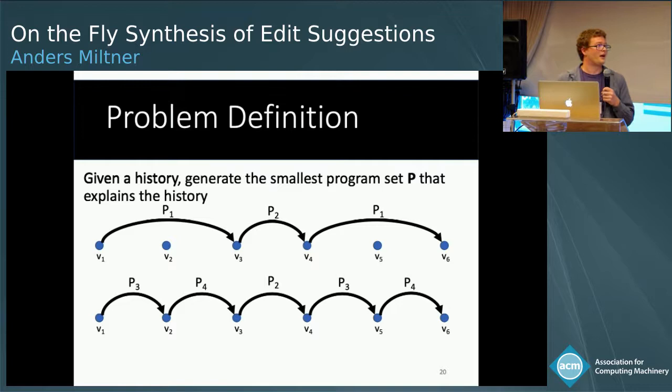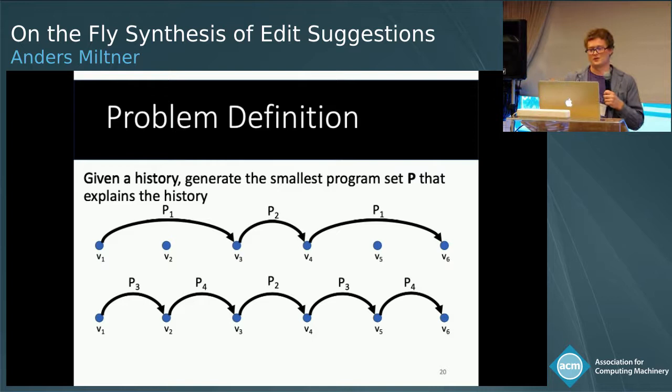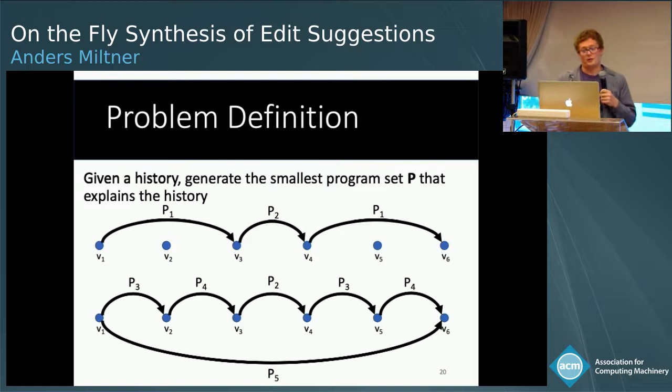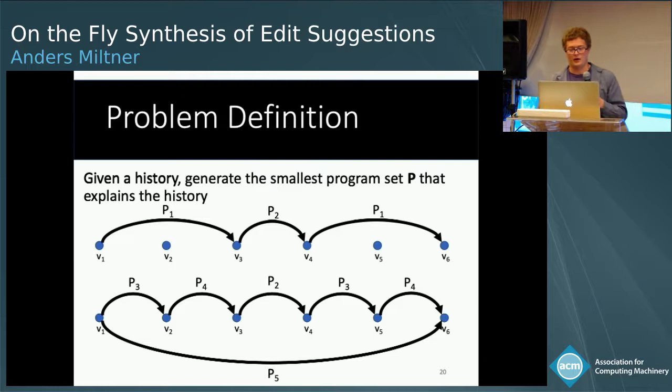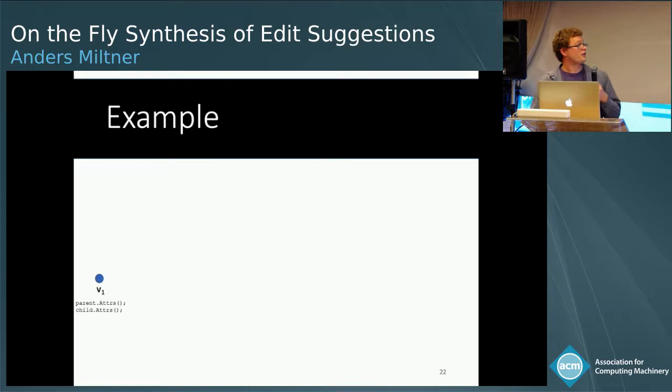Why do we want the smallest program set? Otherwise, you might have many fine-grained repetitive edits, and to perform the repetition you'll have to click apply many times, which is not fun. And why do we have the 'explains the history' requirement? Otherwise, we could just say we found a very small program set — just one that brings from the initial version to the final. So now we've gone through the formalization; let's go through our algorithm.